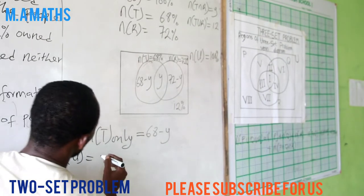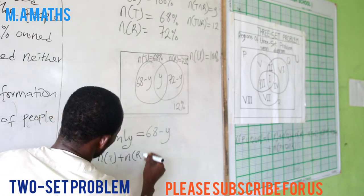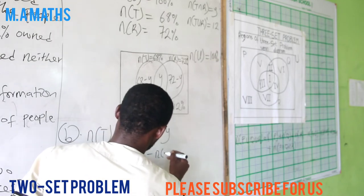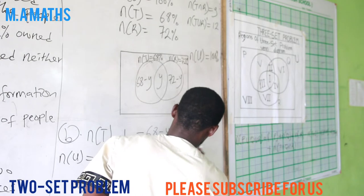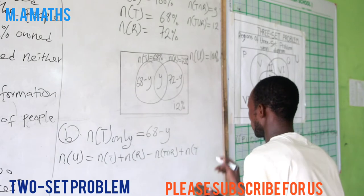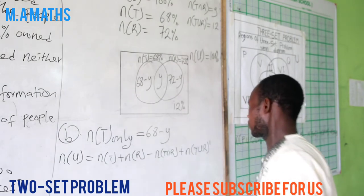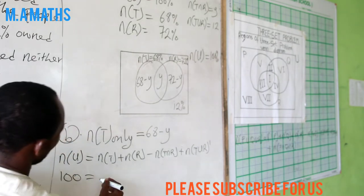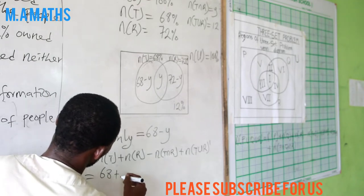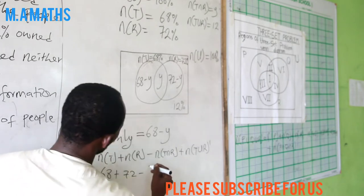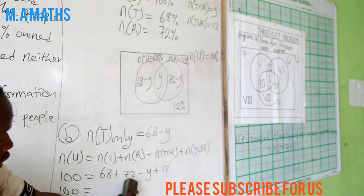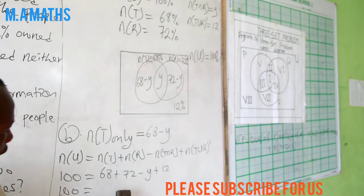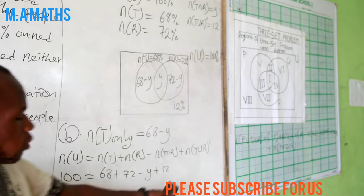So we have n(U) equal to n(T) plus n(R) minus n(T intersection R) plus n(T union R) prime. So we do our substitution. Summing everything here: 100 will be equal to 68 plus 72, that will give us 140, minus y plus 12.